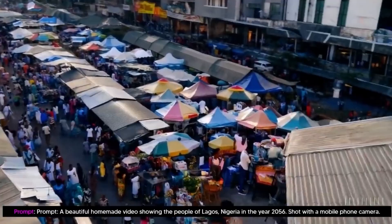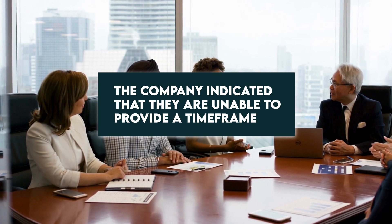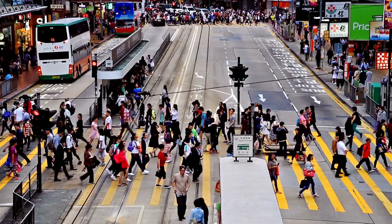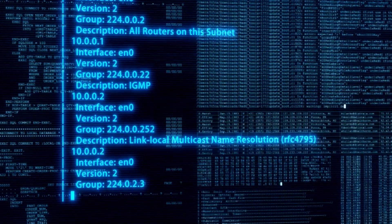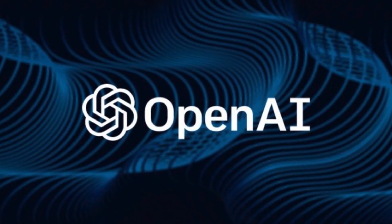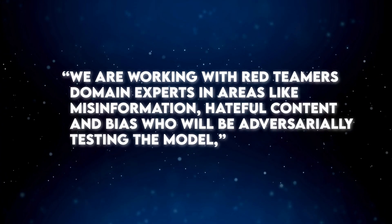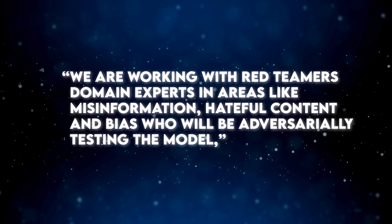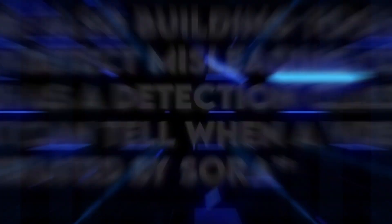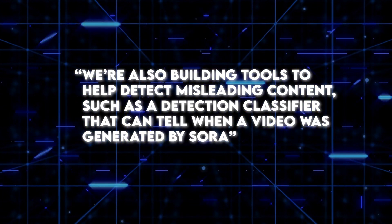Prior to making Sora publicly accessible, OpenAI stated that it was implementing crucial safety measures. The company indicated that they are unable to provide a time frame or any other information regarding Sora's wider public release. To address the worries of lawmakers, educators, and artists worldwide, OpenAI will be implementing a number of significant safety precautions. "We are working with red teamers — domain experts in areas like misinformation, hateful content, and bias — who will be adversarially testing the model," the company wrote. "We are also building tools to help detect misleading content, such as a detection classifier that can tell when a video was generated by Sora."